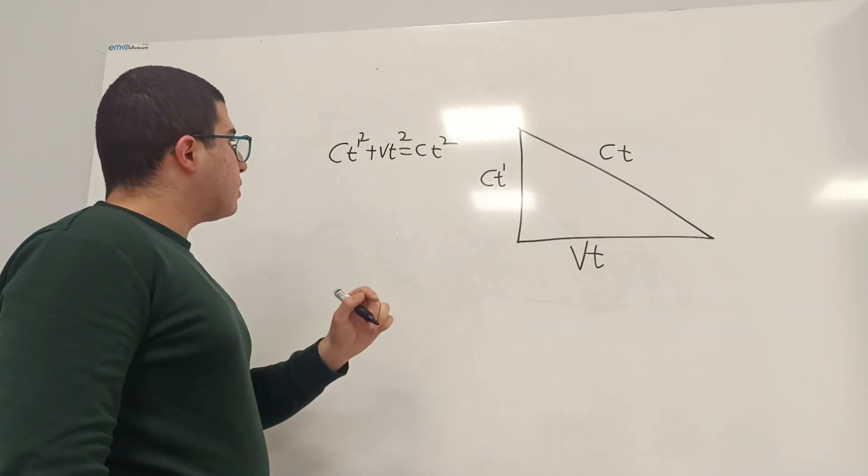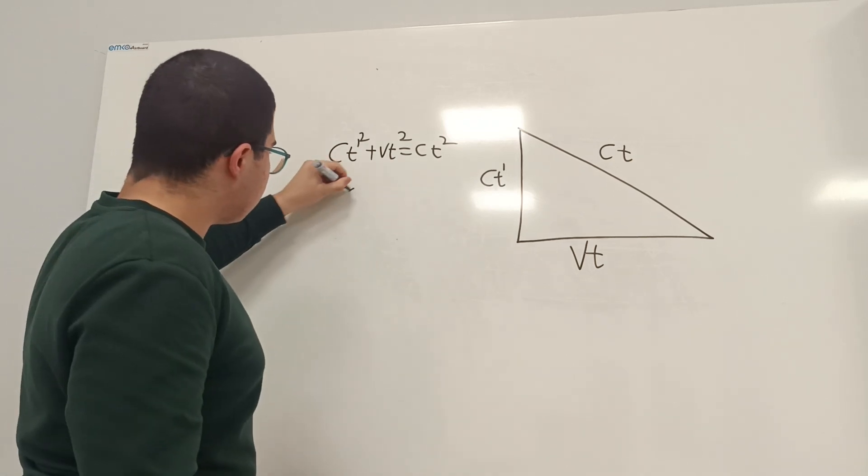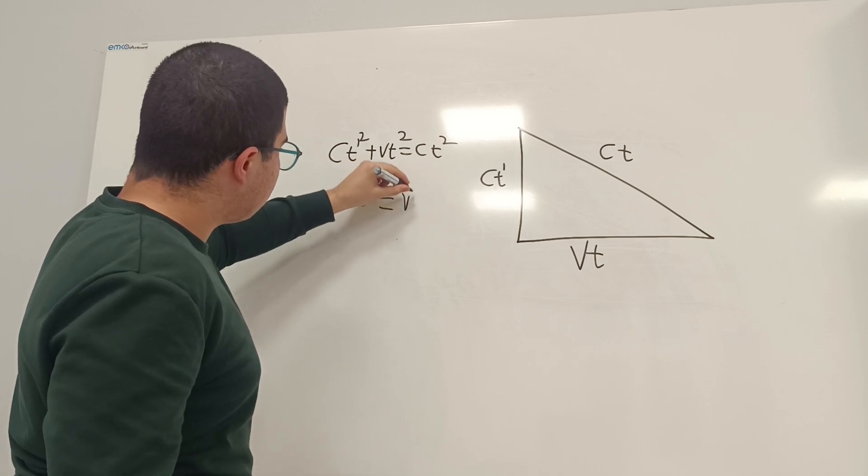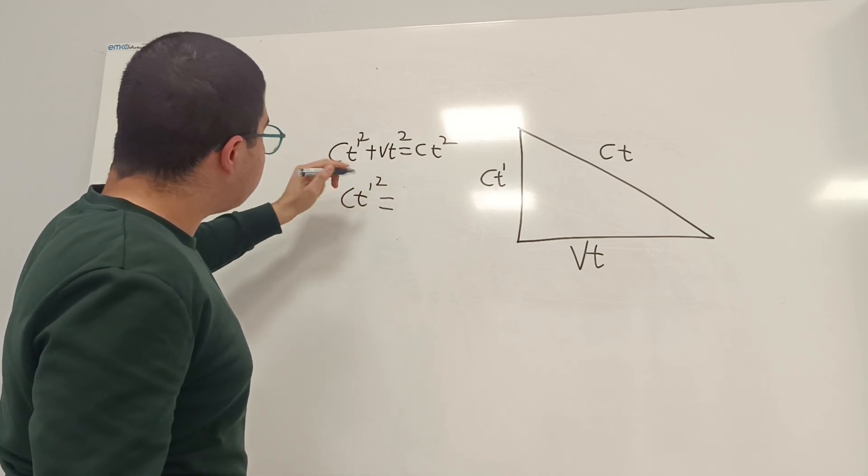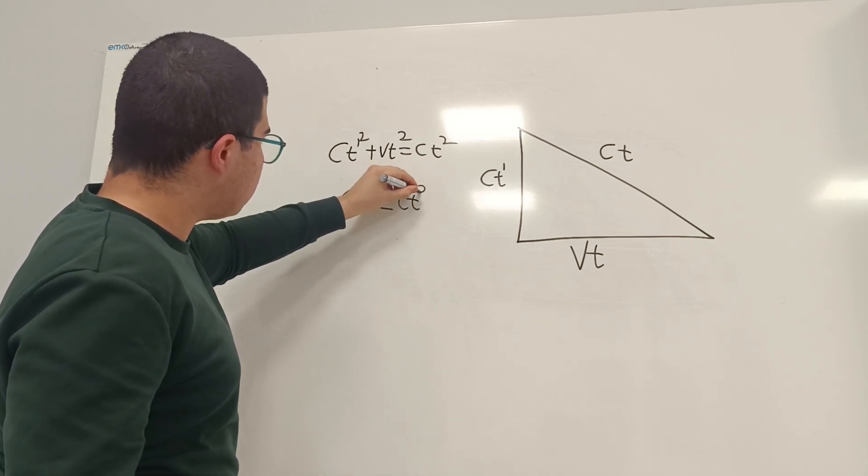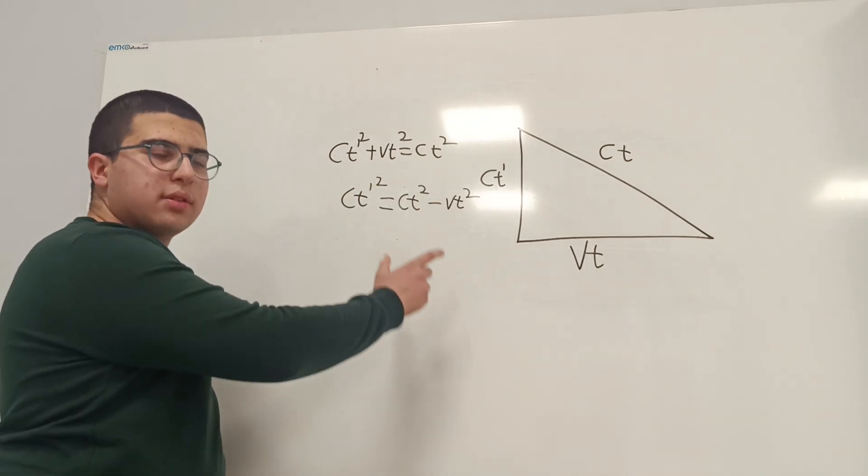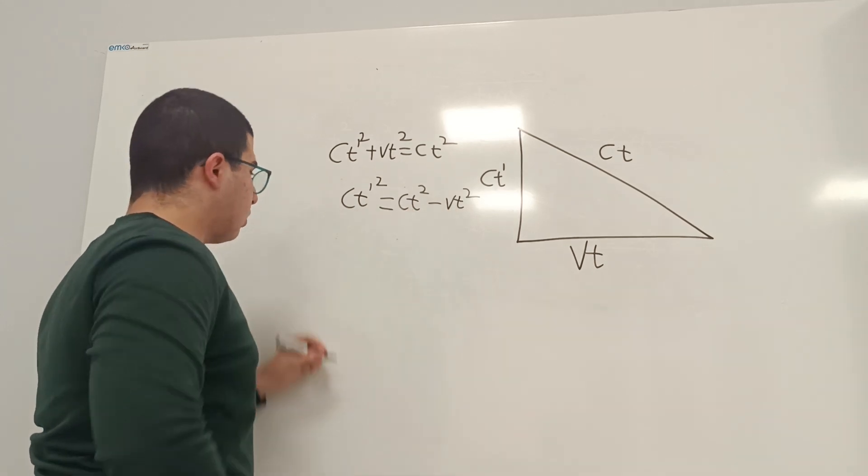So, I will send this to the other side. So, c t prime squared equals c t squared minus v t squared. Let's factor out the t squared term here.